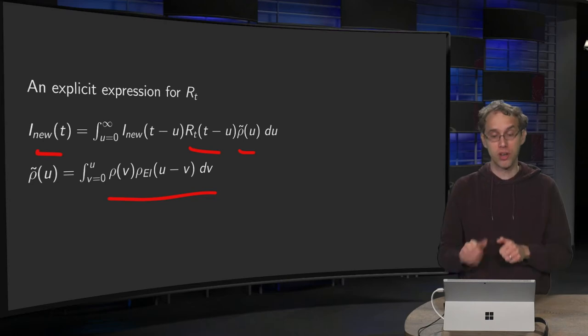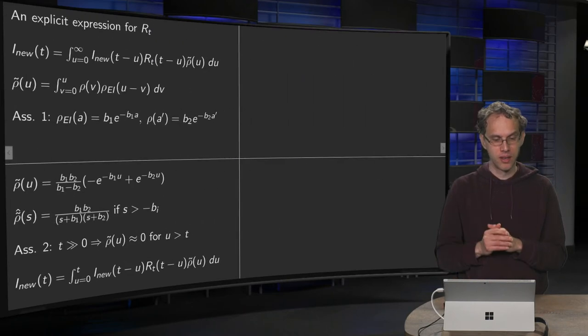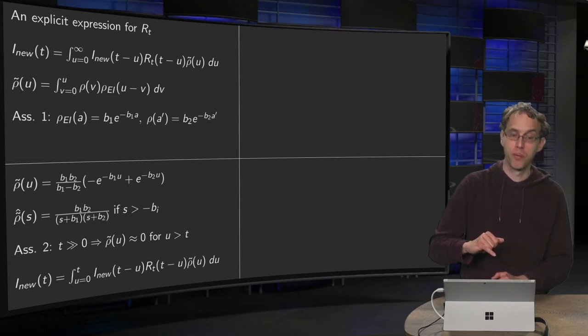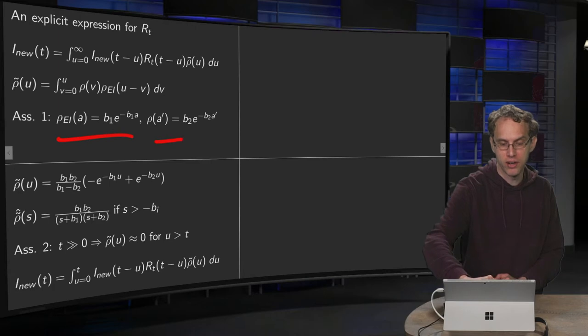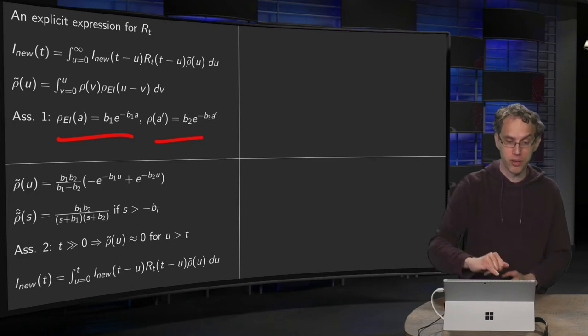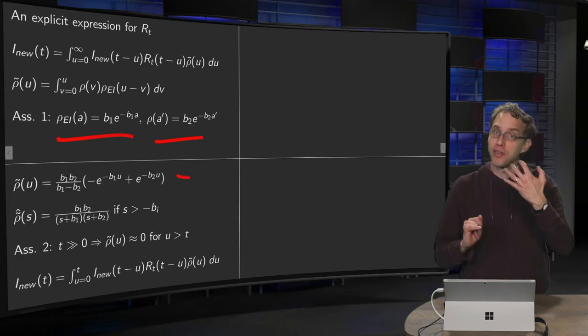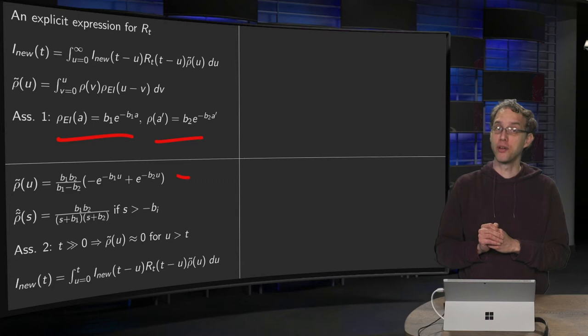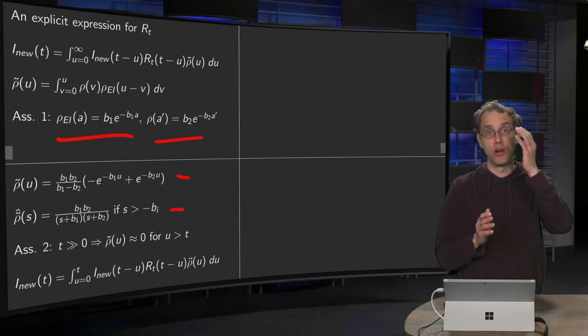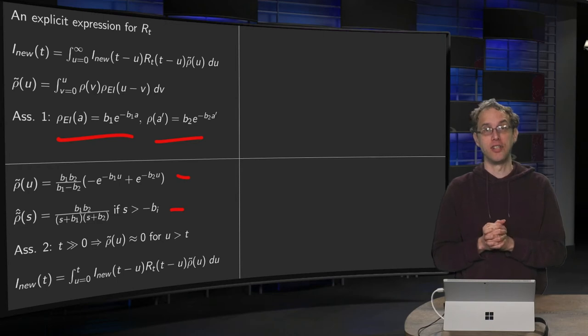But now we want to compute Rt. We assumed for our probability densities exponential probability densities rho_ei and rho_a. And with this assumption in the previous video we computed rho tilde and we also already computed its Laplace transform. So that's known. Assumption is that we assume exponential distributions.